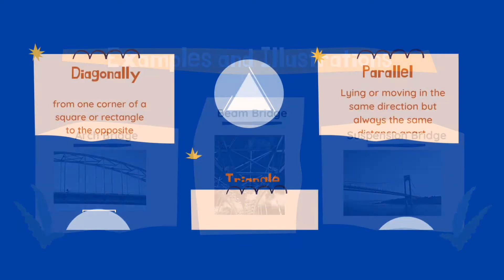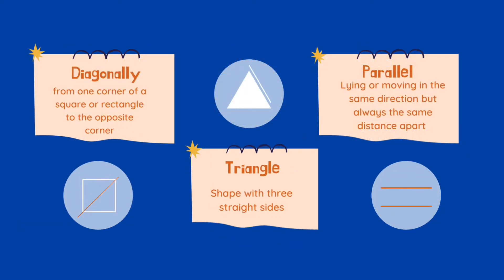Let's go over some quick terms. Diagonally means from one corner of a square or rectangle to the opposite corner. Parallel is lying or moving in the same direction but always the same distance apart. A triangle is a shape with three straight sides. In case you missed the brain lab on cool structures and pyramids, we discussed triangles and the great pyramids — be sure to check it out.